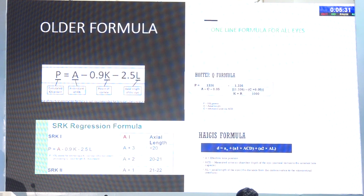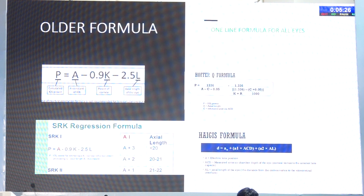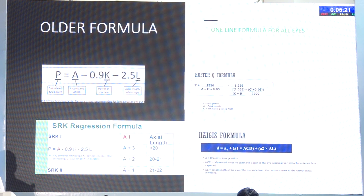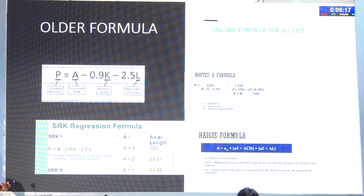The older formulae are all one-line formulae — just one-line calculation applied to all eyes: small eyes, large eyes, buphthalmos, nanophthalmos, post-LASIK. The older formulae are one-line formula applied to all eyes, which will not work well for unusual eyes. The modern formulae have different calculations in different situations — post-LASIK has its own calculation, keratoconus has its own calculation.